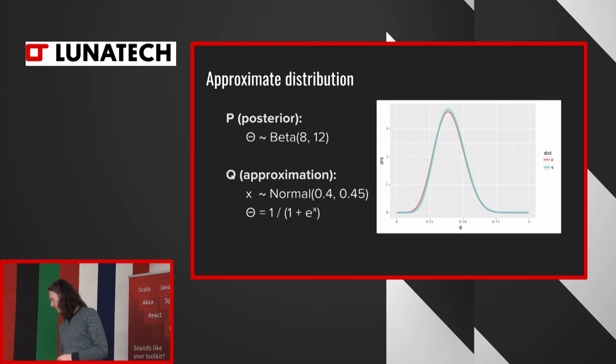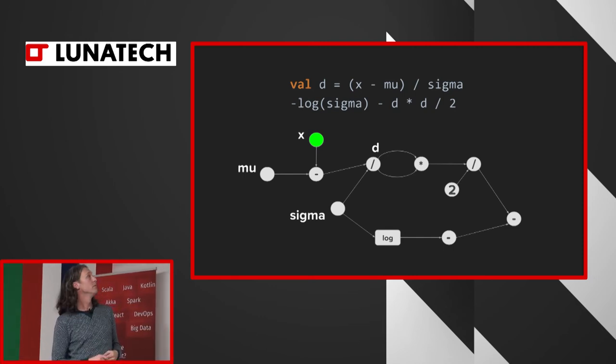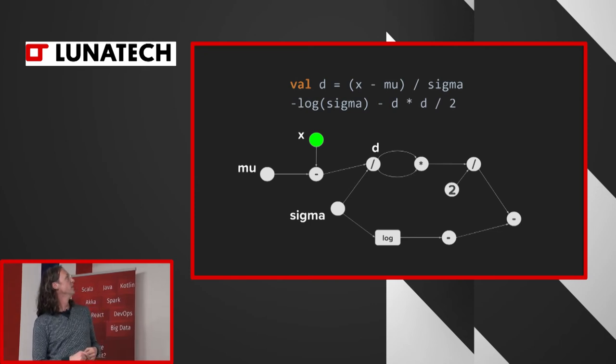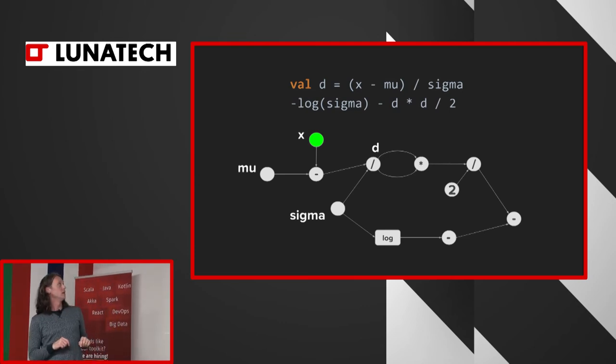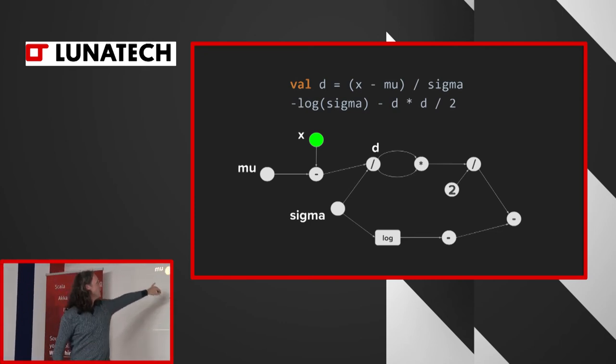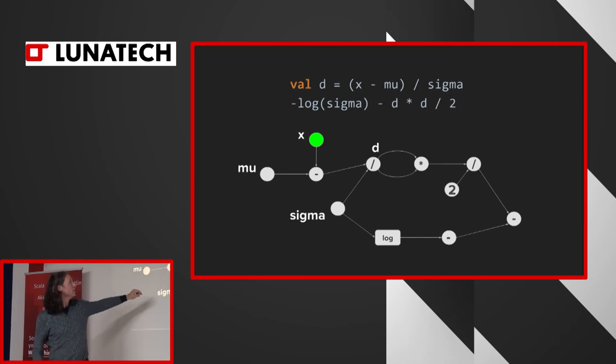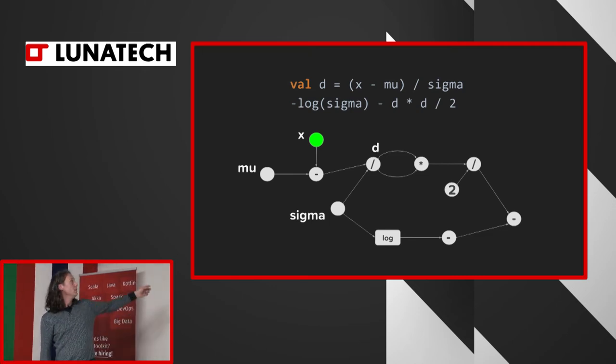And here is one example. Here I have the beta distribution, which is the distribution for the clicks. And here I approximate it with a normal distribution, followed by a sigmoid transformation. And you can see, well, it's very different distributions, but this one is easy to use in variational inference, the other one is not. And still you can use one to approximate the other quite well.